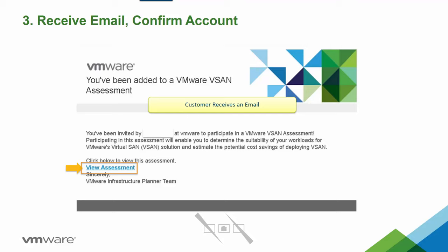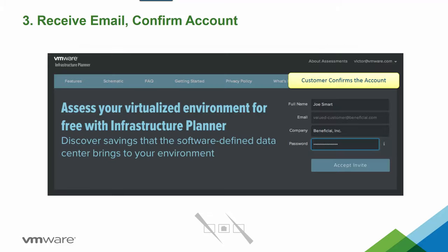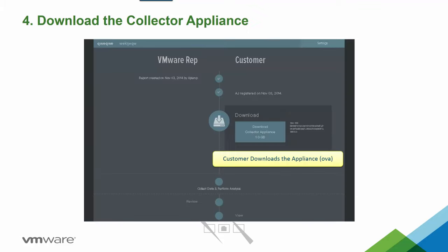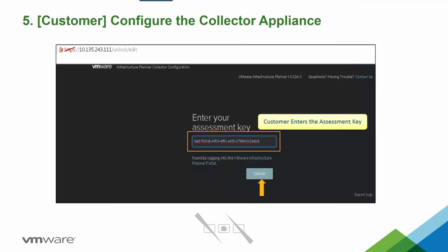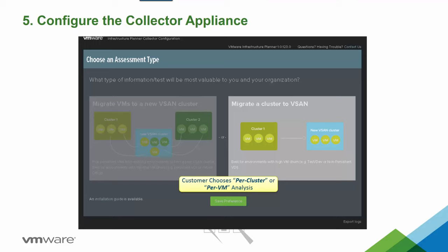Here's an example of the email the customer will receive. Once they receive it, they click the 'View Assessment' link, which takes them to the portal. They log in with their provided credentials and accept the invitation by clicking 'Accept Invite.' Once logged in, they see their assessment view and can download the collector appliance OVA, which is approximately one gigabyte. They can then select whether to run the assessment on a per-VM basis or per-cluster basis and save their preferences.